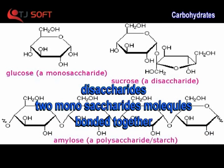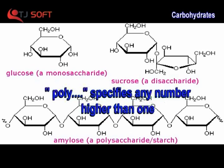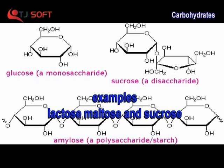Disaccharides: two monosaccharide molecules bond together. The prefix 'di' specifies exactly two, while 'poly' specifies any number higher than one. Examples include lactose, maltose, and sucrose.